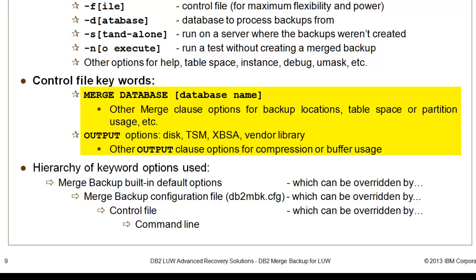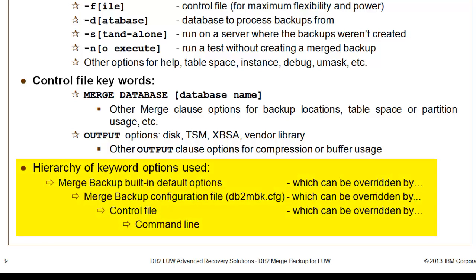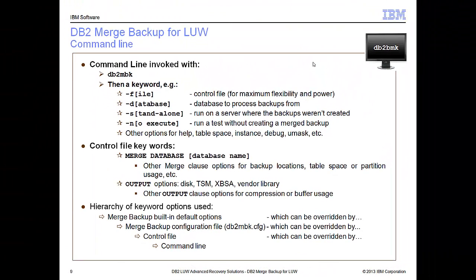There are a few other options, but these are the ones used most. The control file keyword is very simple: merge database, database name, and then the output clause. Think of Merge Backup as simply a pipe — files in, one file out. There is a hierarchy of keywords used. Merge Backup has some built-in default options that can be overridden with a configuration file, db2mbk.config. This controls the basic behavior of the merge backup. You can override that in the control file itself, or override the control file at the command line that starts it.